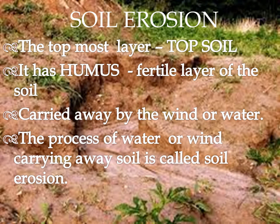As the soil forms, it settles down in layers. The topmost layer is known as topsoil. The topsoil has humus and is the fertile layer of the soil. Sometimes the topsoil is carried away by wind or water to a different place, removing the fertile portion of the soil and causing the land to become barren. The process by which wind or water carries away the soil is called soil erosion.